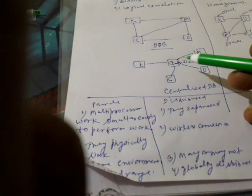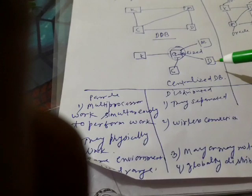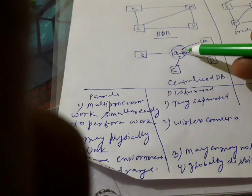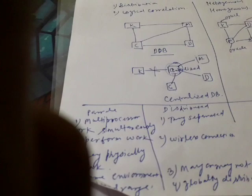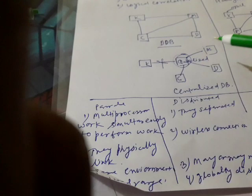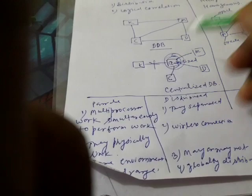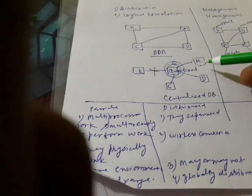First, let's understand the requirement. In a centralized database, there is a central computer, and cities like Mumbai, Delhi, Kolkata, and Chennai are connected to it. Whenever they want to perform any operation, they take the value from there. Suppose due to some problem this link fails — then Kolkata is disconnected from Mumbai, Delhi, and Chennai, and they cannot communicate with each other.